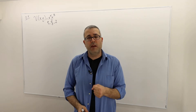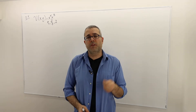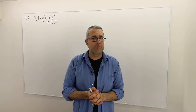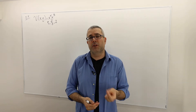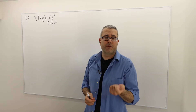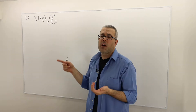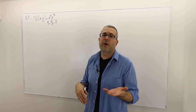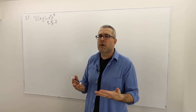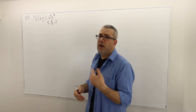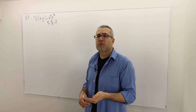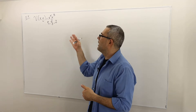Hi guys, welcome to another episode. In this episode we are going to solve some utility maximization problems with some specific utility functions. The first example is a standard Cobb-Douglas utility function: U(x,y) = x^alpha * y^beta, where alpha and beta are positive numbers less than 1. The price of good x is px, price of good y is py, and the income is I.